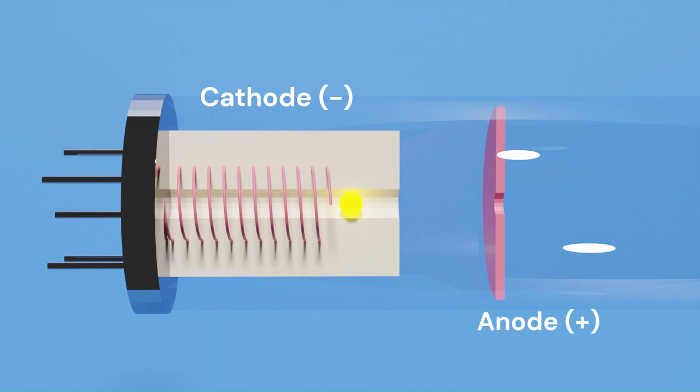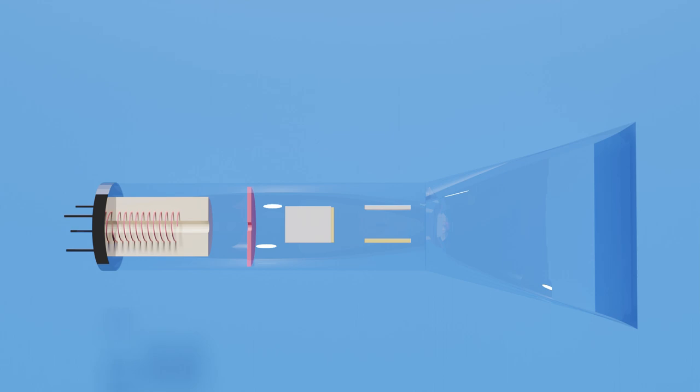Now we have a nice straight beam of electrons. To make them actually move in some interesting pattern, we need some way to deflect them. There are many ways you can do this, but I'm going to add two metal plates. One positively charged and one negatively charged.